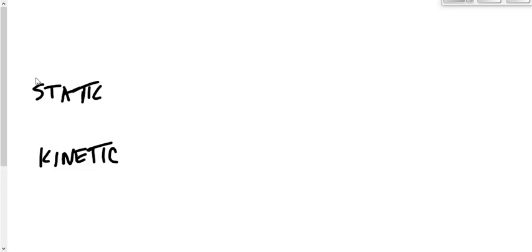Static friction versus kinetic friction. Static friction is the friction that resists motion when an object is at rest — it tries to keep an object from beginning to move. I often refer to static friction as the 'stubborn friction.' That's not a real name, but it reminds us that it's that force of friction that is stubborn.